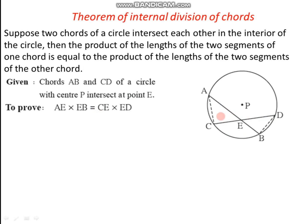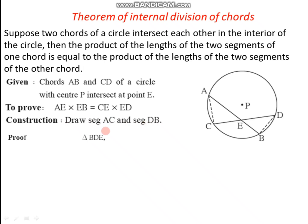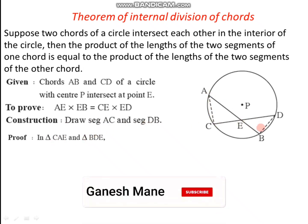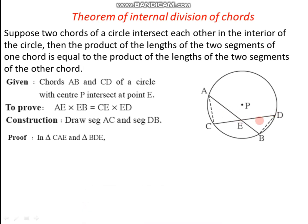To prove this, we have to do one construction: we have to join points A and C, and points B and D. So the construction is segment AC and segment BD. By doing this construction, we have got two triangles — triangle CAE and triangle BDE — and we have to show that these two triangles are similar.